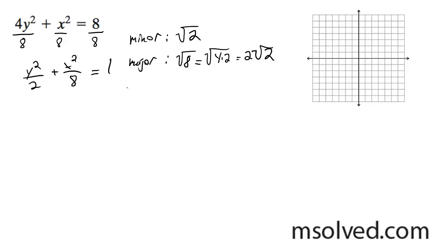And to find my foci, it's going to be square root of 8 minus 2, the larger end minus the smaller, which is square root of 6.